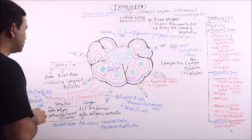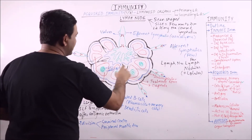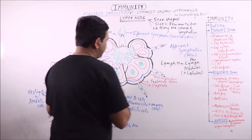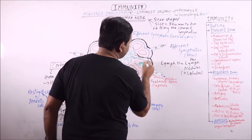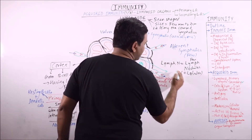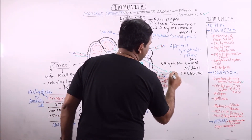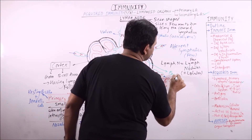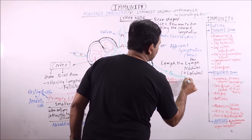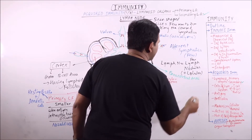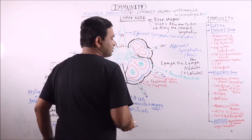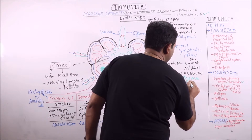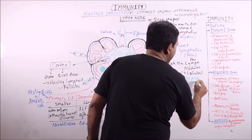This is the cortex, and inner to the cortex is the paracortical area, which can be considered as the deeper part of the cortex in the lymph node. It is important to know that it is the T cell area.